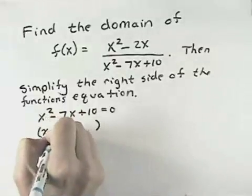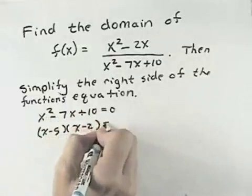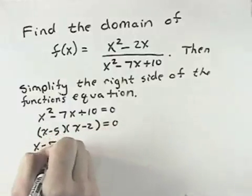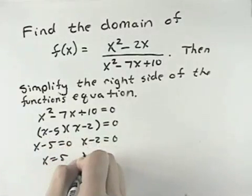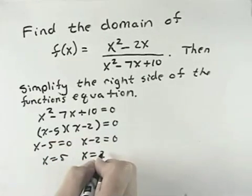And so we can factor this into x minus 5 times x minus 2 equals zero and set each of those equal to zero. So x equals 5 and x equals 2 cannot be part of our domain.